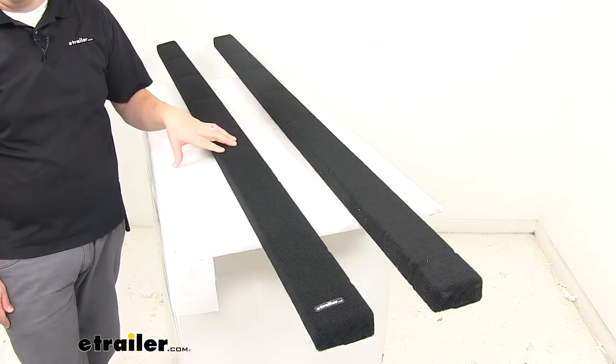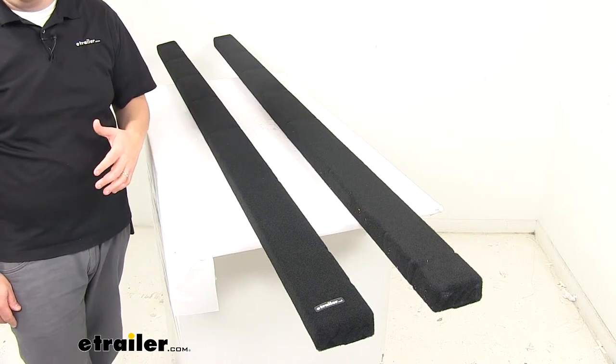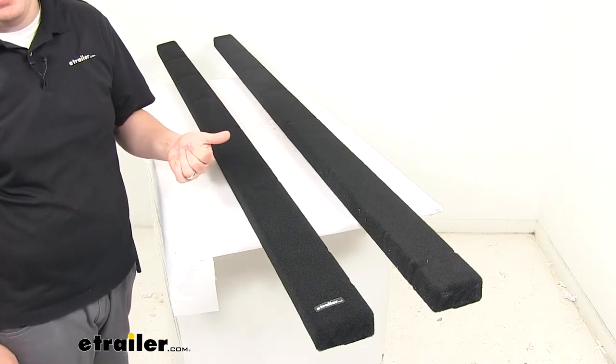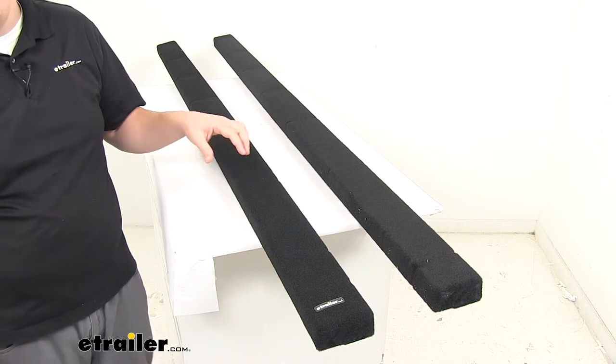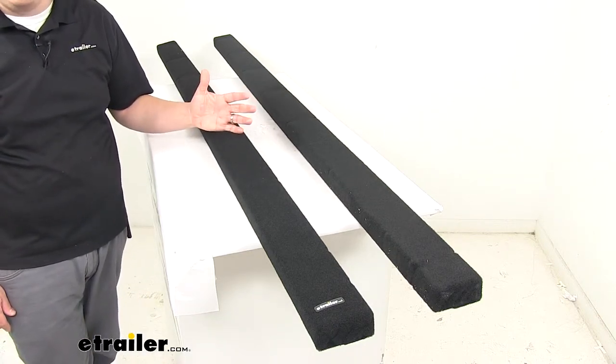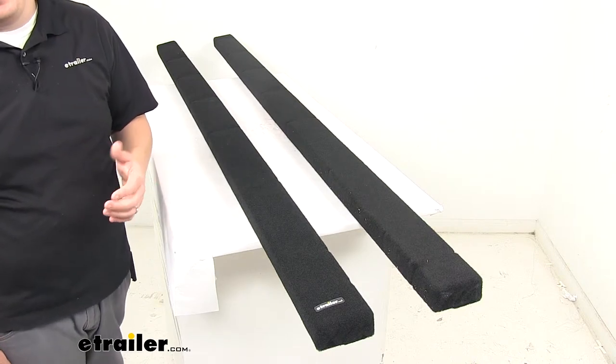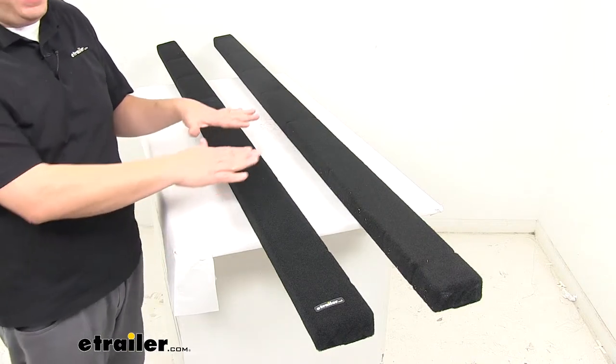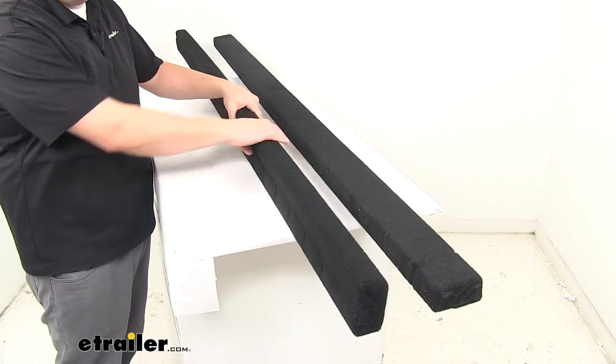These bunk boards can be installed in either of two ways. You can mount to existing brackets on your trailer, or you can attach to the trailer frame with swivel brackets, which are sold separately, and that's going to allow for height and angle adjustment. They can mount flat, and they can also mount upright.